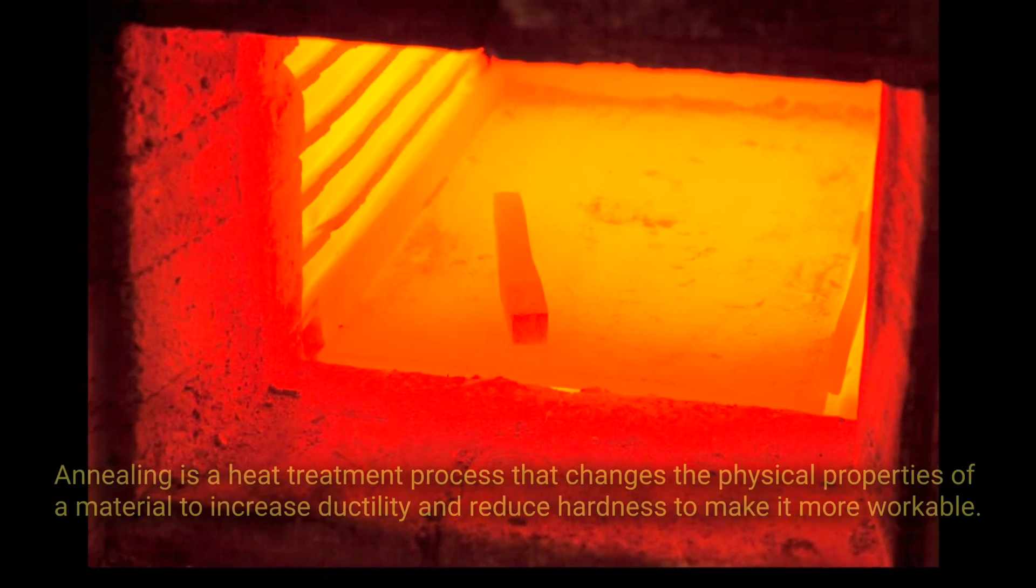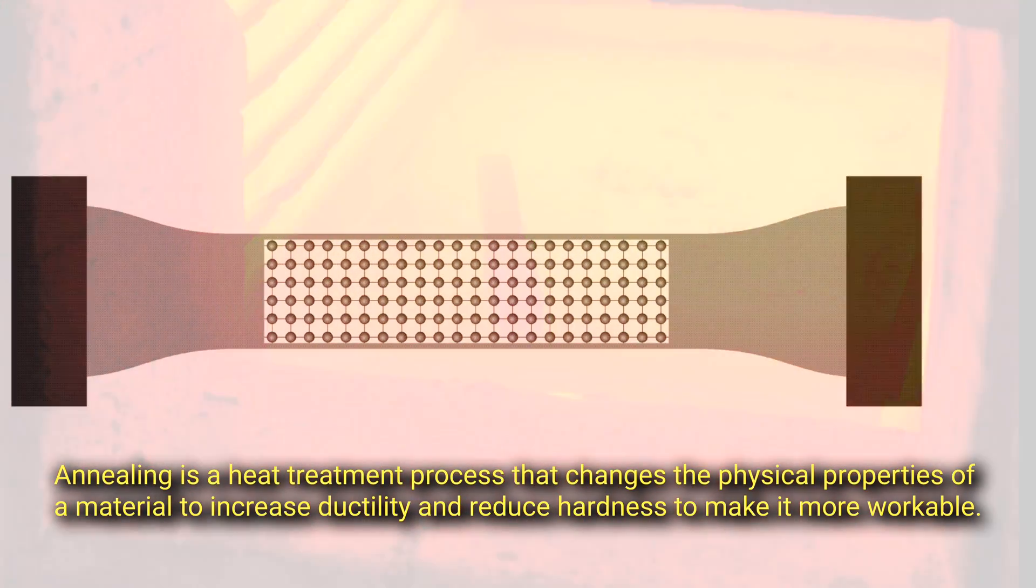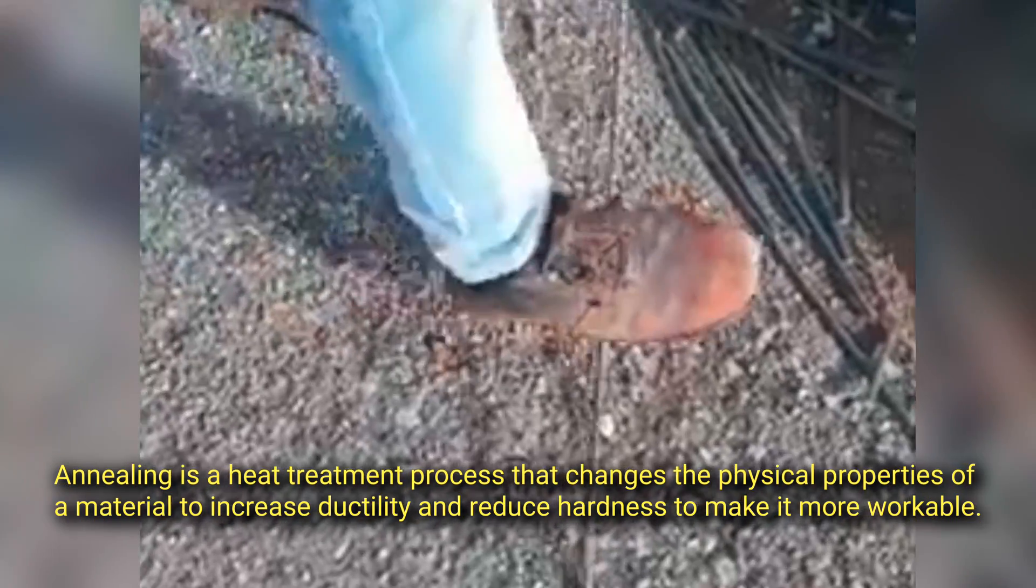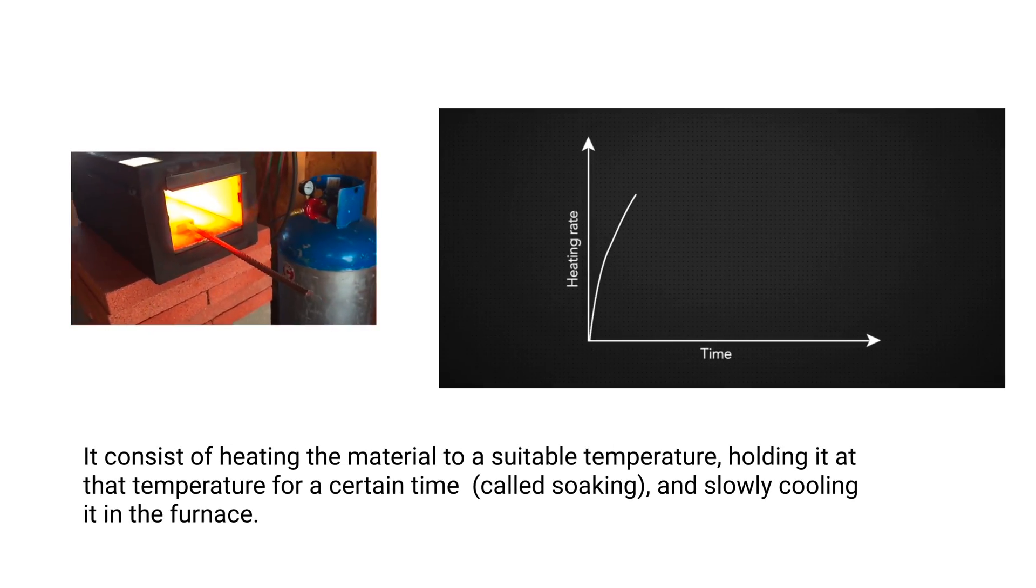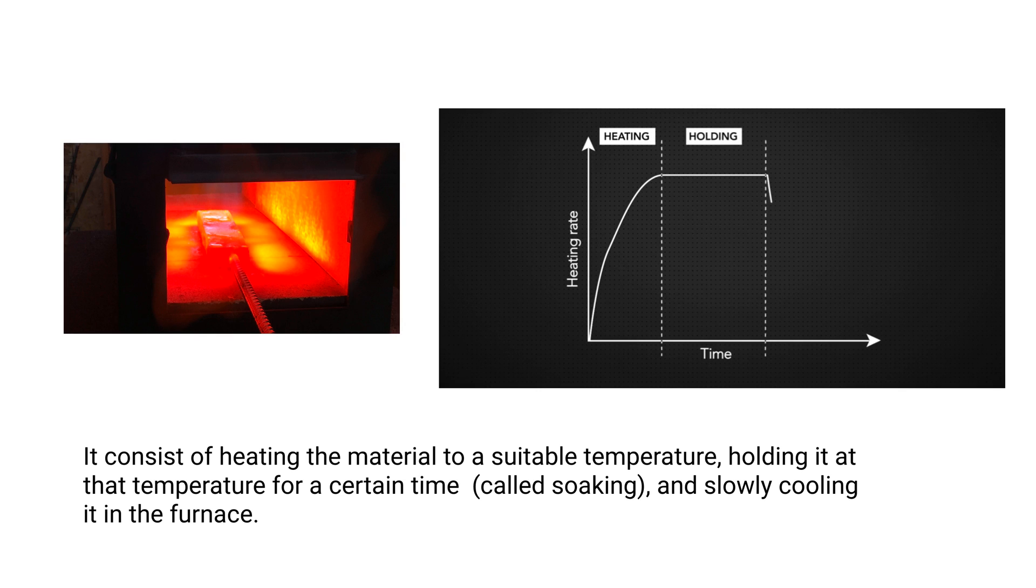What is annealing? Annealing is a heat treatment process that changes the physical properties of a material to increase ductility and reduce hardness to make it more workable. It consists of heating the material to a suitable temperature, holding it at that temperature for a certain time called soaking, and slowly cooling it in the furnace.